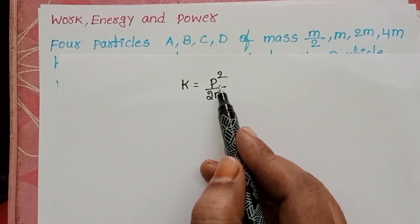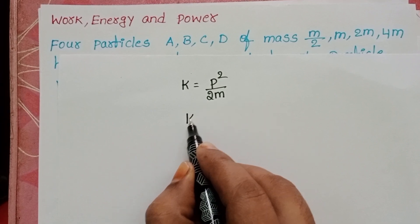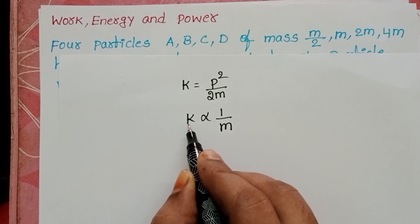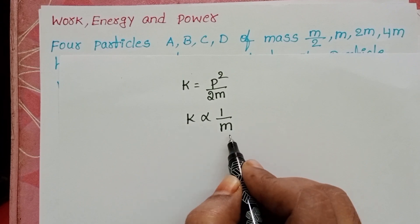Here momentum is constant. So kinetic energy is directly proportional to 1 by mass. So kinetic energy is inversely proportional to the mass of the particle.